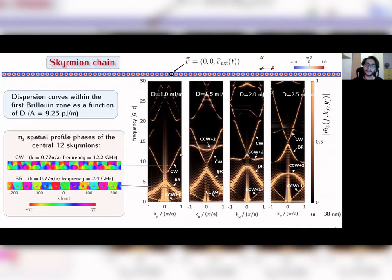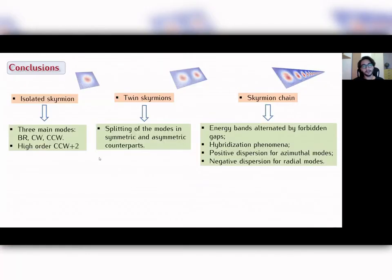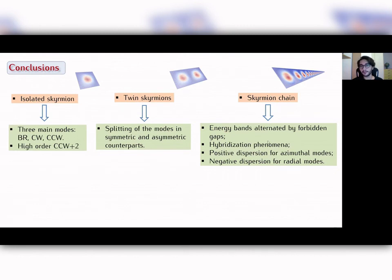In conclusion, we found three main modes and one higher-order mode in the investigated frequency range. We observed the splitting of modes into symmetric and asymmetric counterparts in the twin skyrmion. In the skyrmion chain, which represents a one-dimensional magnetic crystal, we observed the formation of energy bands and energy gaps, with interesting hybridization or anti-crossing phenomena between bands, and opposite slopes of dispersion curves between azimuthal and radial modes.